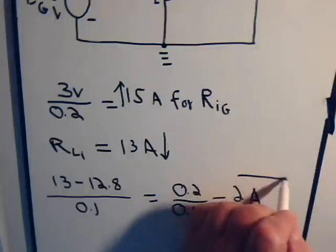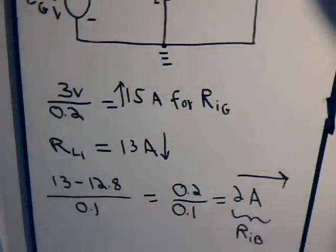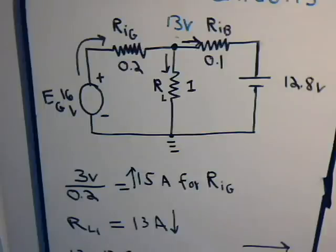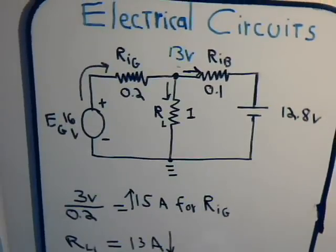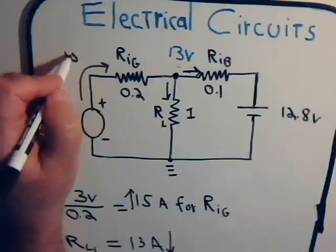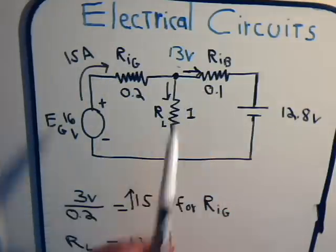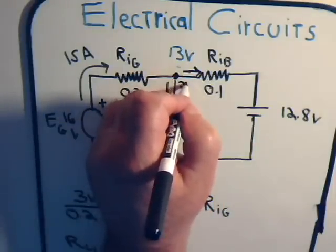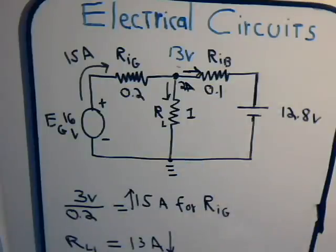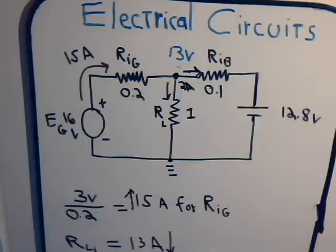Going back to the top to summarize: the current through the generator branch is 15 amps flowing into the node; the current through the battery branch is 2 amps flowing away from the node; and the current through RL is 13 amps flowing downward. That's it for this video. In the coming videos we'll have circuits with multiple nodes and simultaneous equations to solve for all the unknown variables — so come back and join us for those more complicated problems.